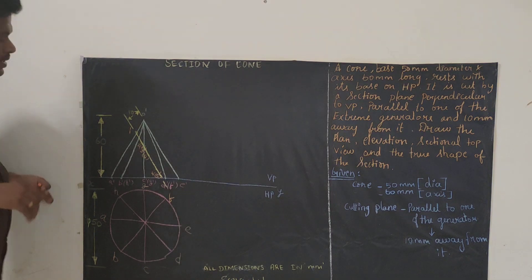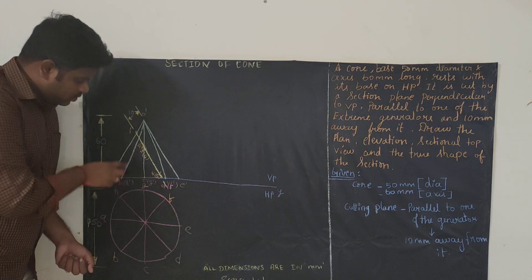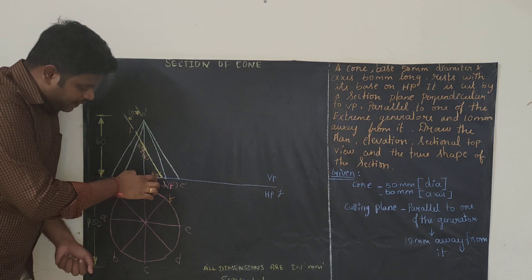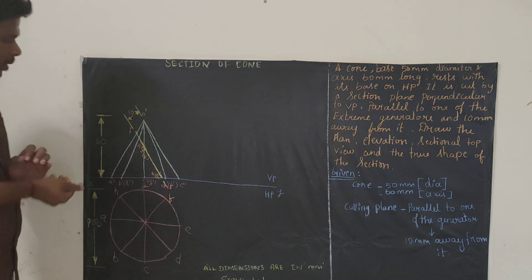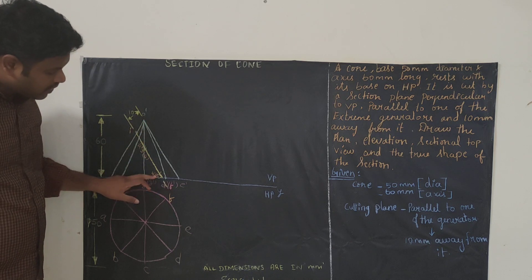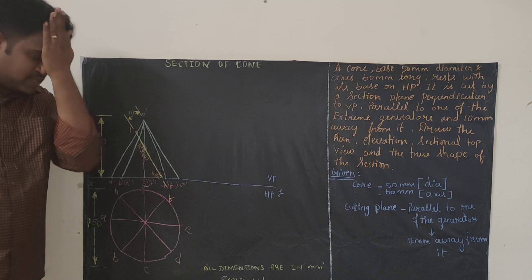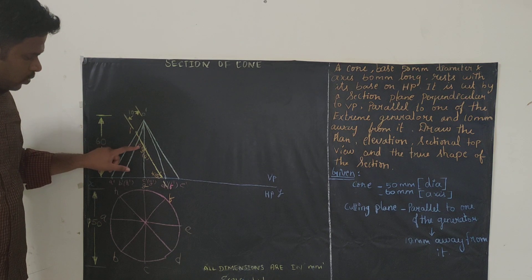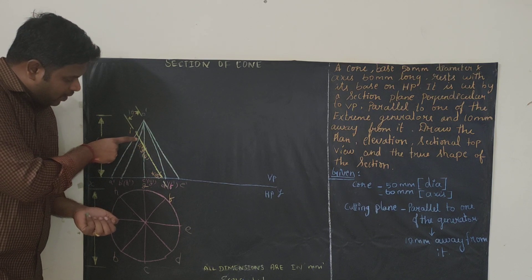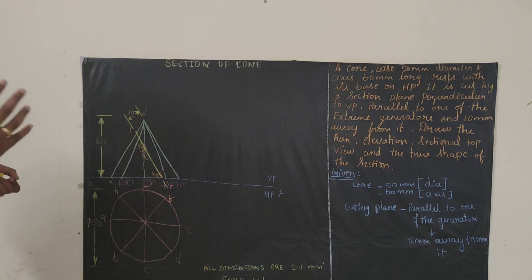Now, coming to the cutting points. We will get cutting point 1' on O'E', point 2' on O'B', point 3' on O'C', point 4' on O'D', point 5' on O'F', point 6' on O'G', and point 7' on O'H'. Here we will have two cutting points on some generators, and here we will be having two cutting points. Try to write legibly.